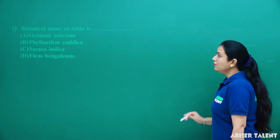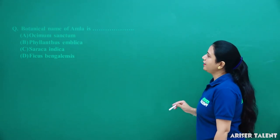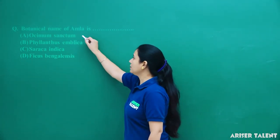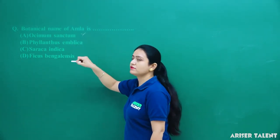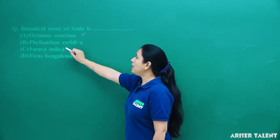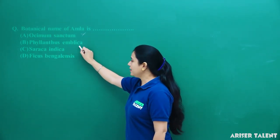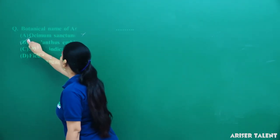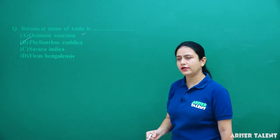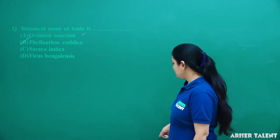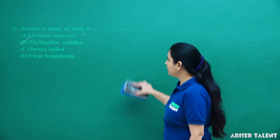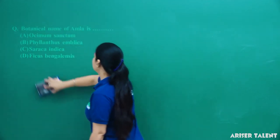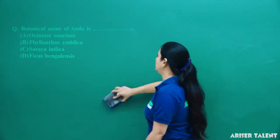Next, the botanical name of Amla — Ocimum sanctum is the name of Tulsi, not Amla. The botanical name of Amla is Phyllanthus emblica. You can learn it: the botanical name of Amla is Phyllanthus emblica.